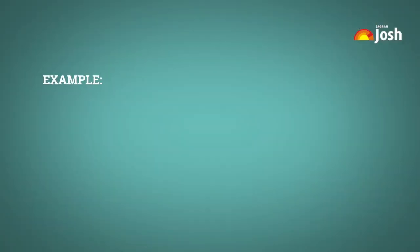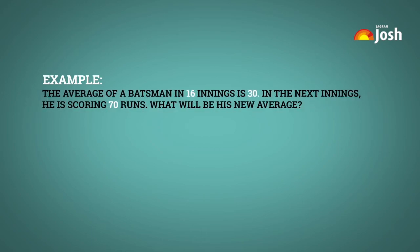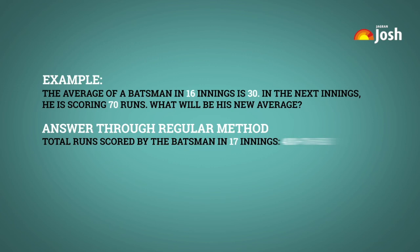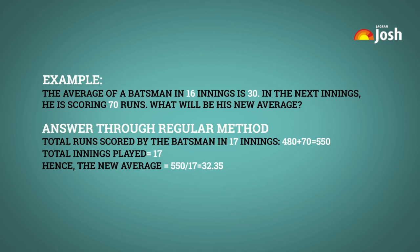Let's give you an example. The average of a batsman in 16 innings is 30. In the next innings he scores 70 runs. What will be his new average? Using the regular method: the total runs scored in 17 innings would be 480 plus 70, which equals 550. The total innings played equals 17. Hence, the new average is 550 divided by 17, which equals 32.35.